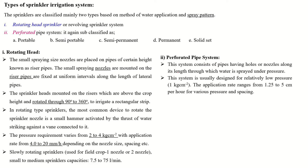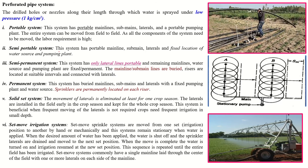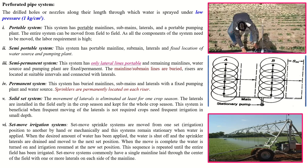The perforated pipe system is further classified as portable, semi-portable, permanent, semi-permanent, and solid set. In this system, the pipes have holes or nozzles along their length through which water comes under high pressure. This system usually requires a low operating pressure of 1 kg per centimeter square, and the application rate is only 1.25 to 5 centimeter per hour.